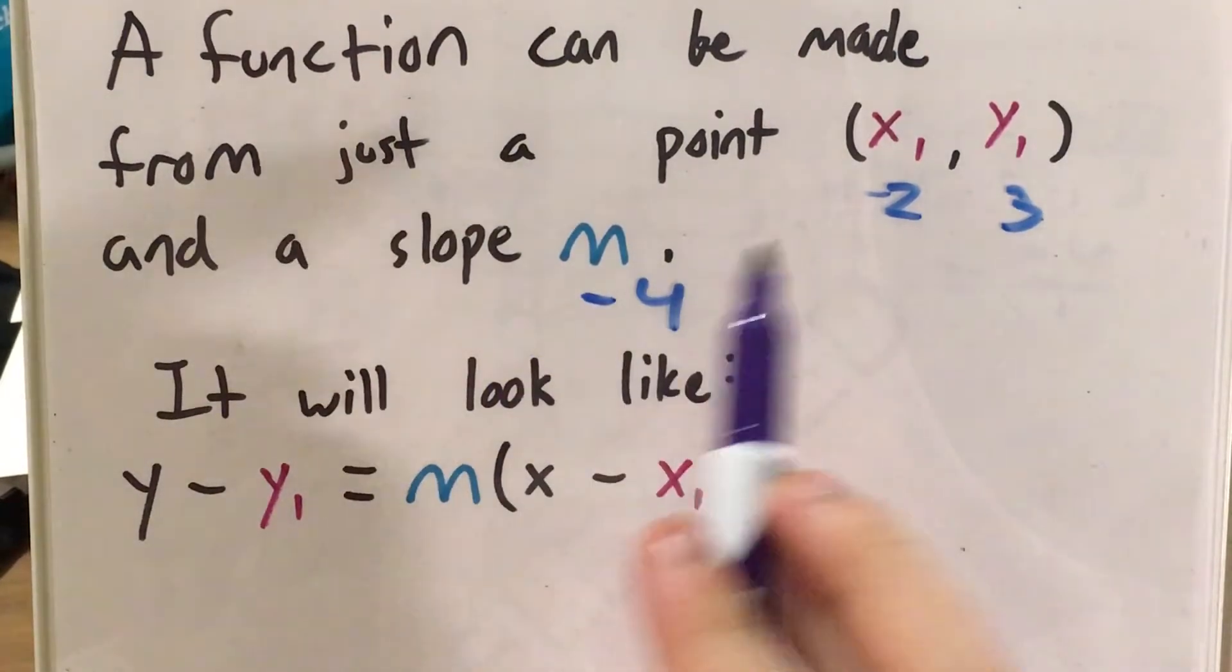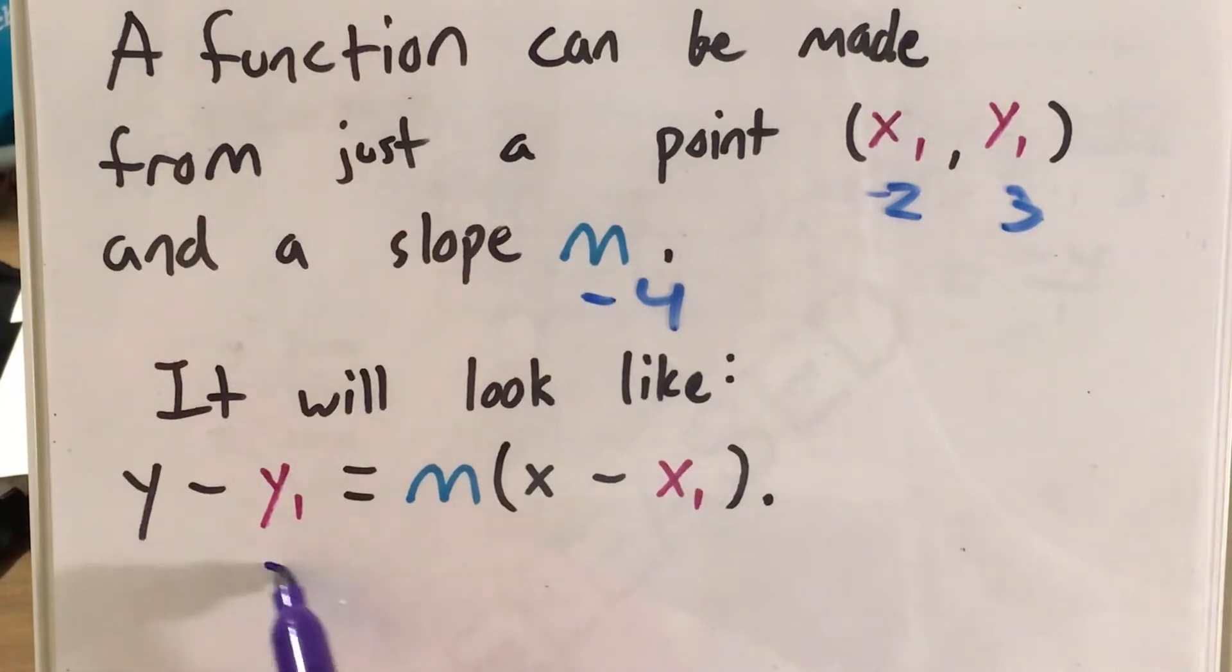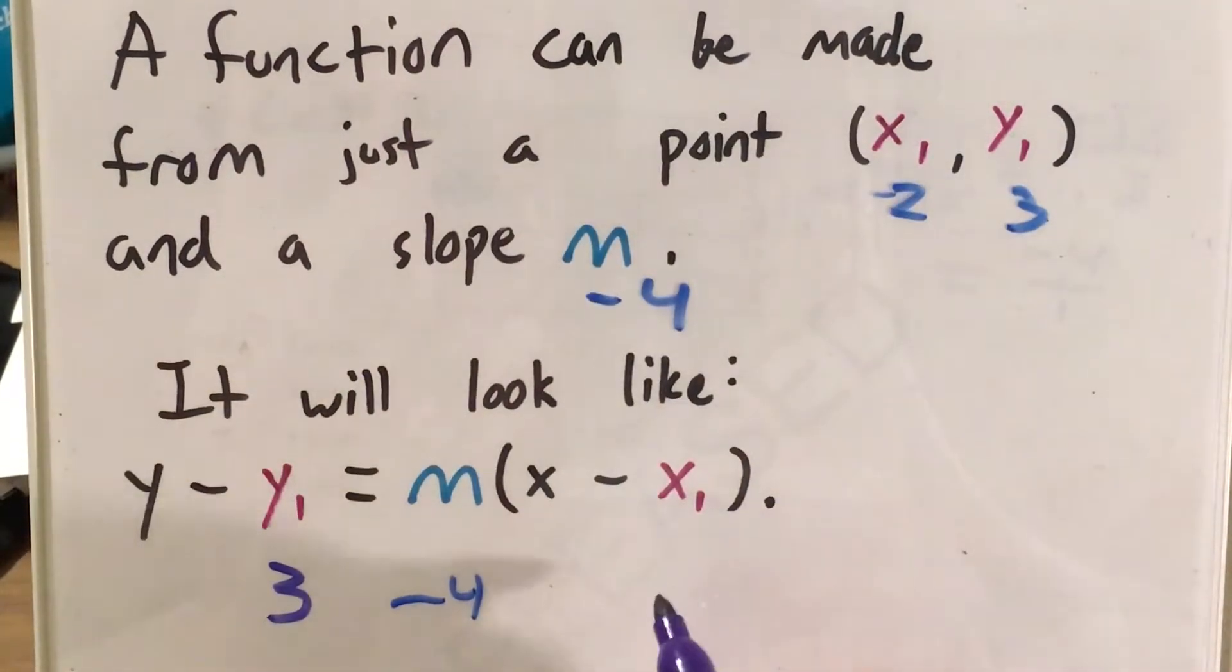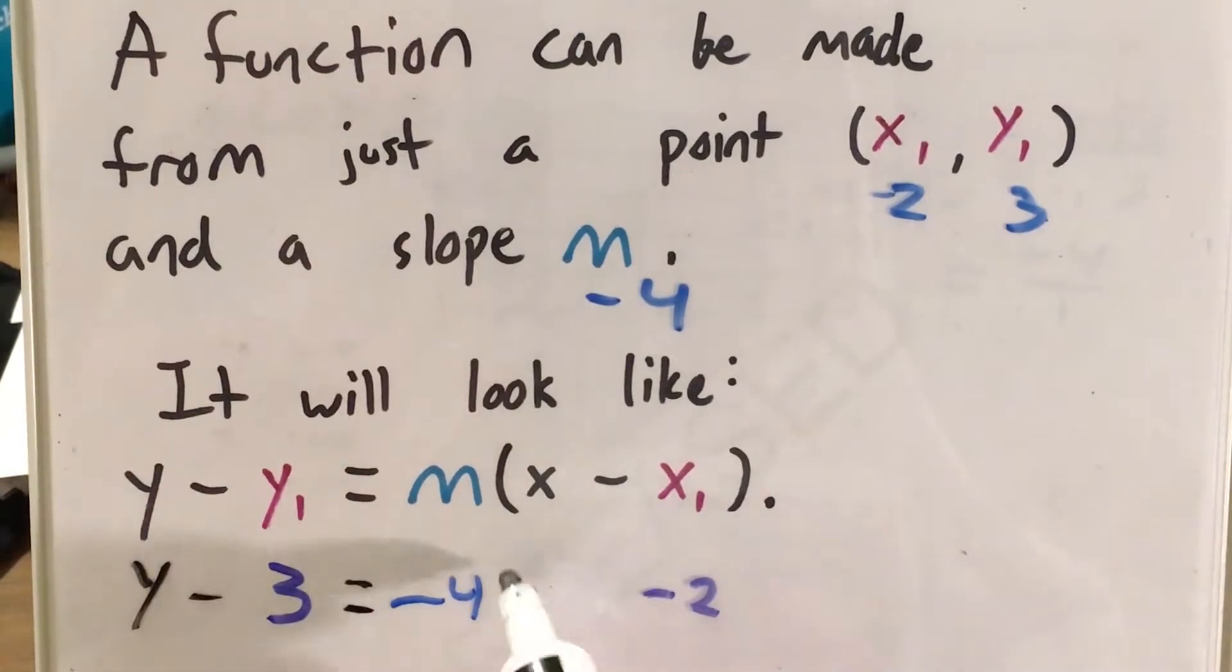This would look like y minus our y₁, which is 3. My slope is -4, and my x₁ is -2. The formula is y - y₁ = m(x - x₁). So we have y - 3 = -4(x - (-2)).